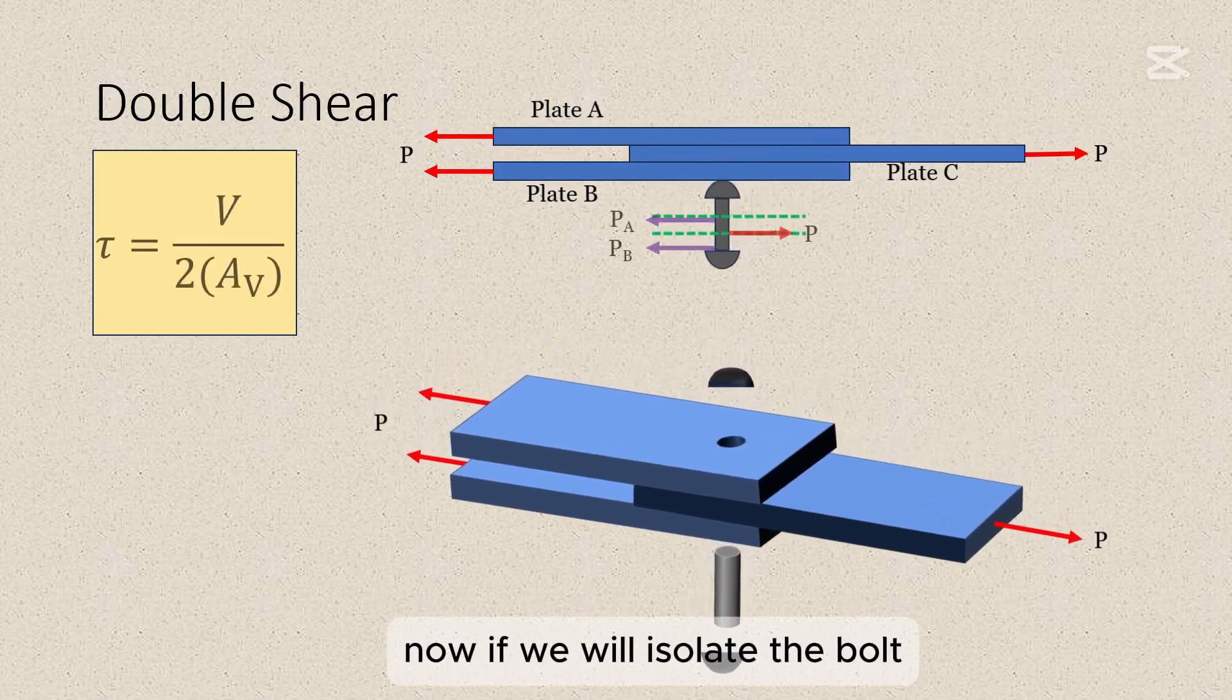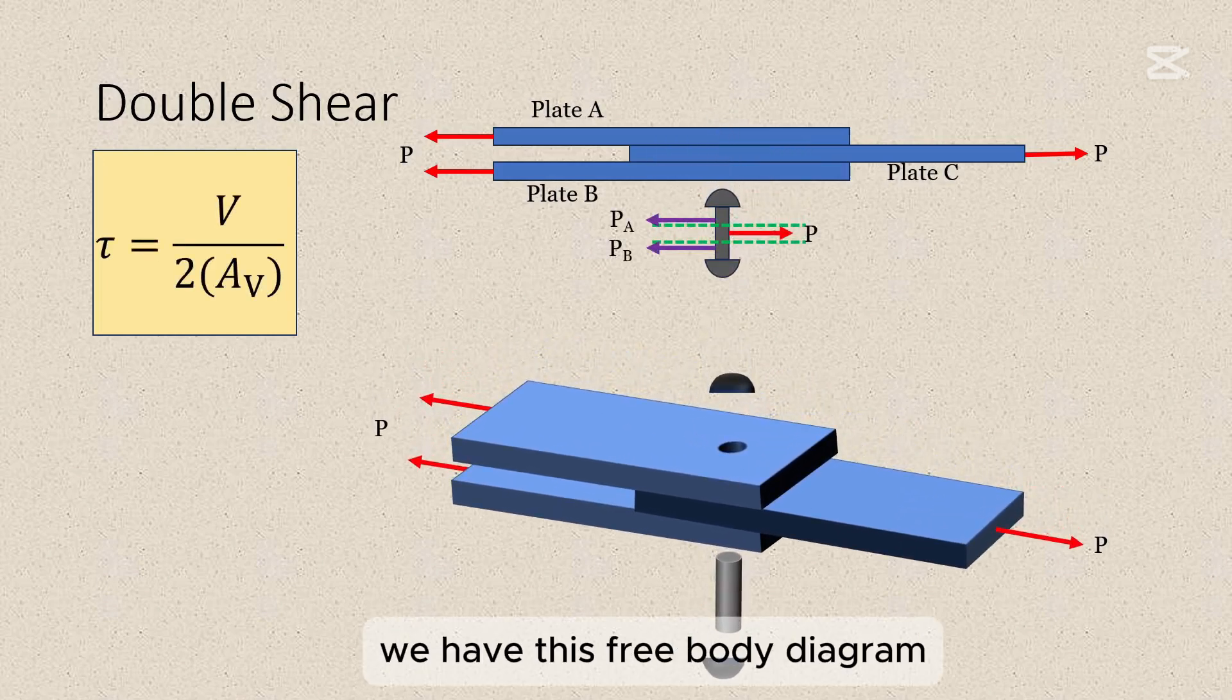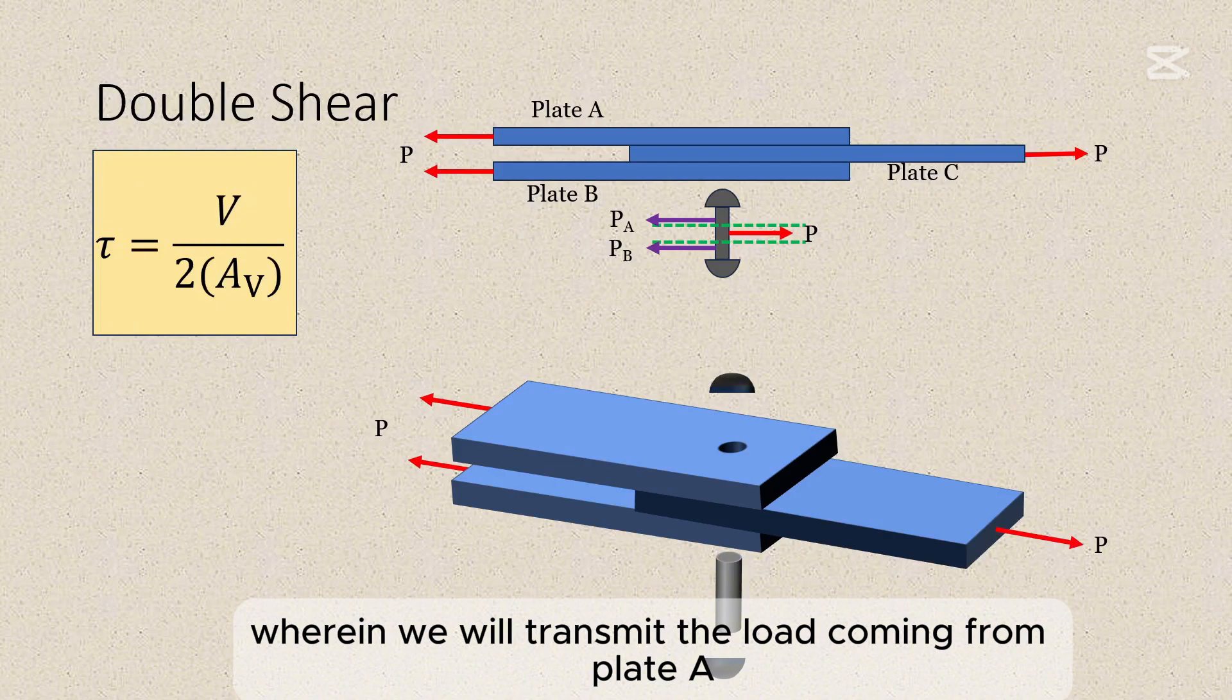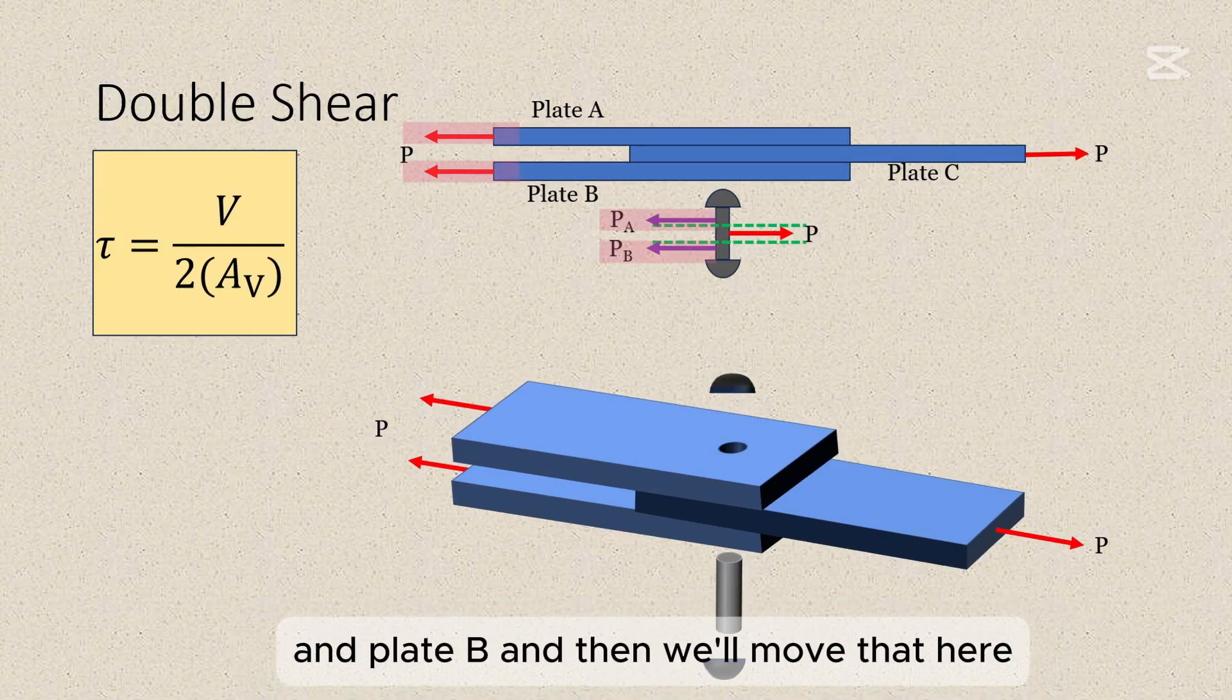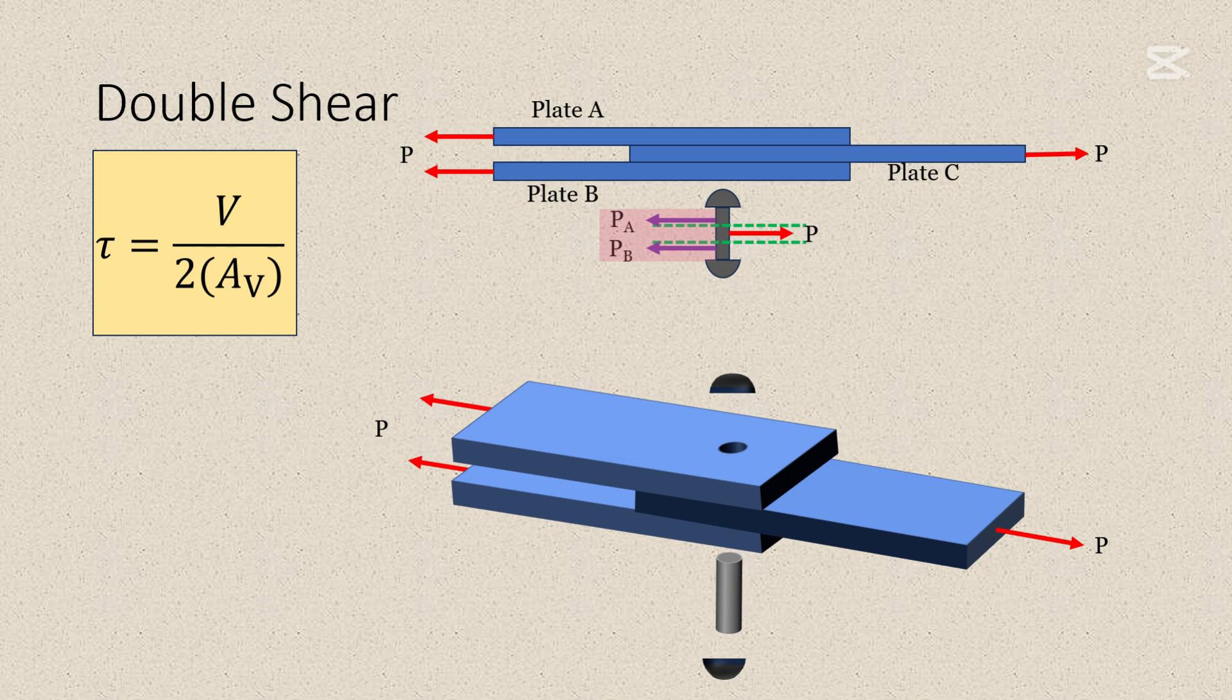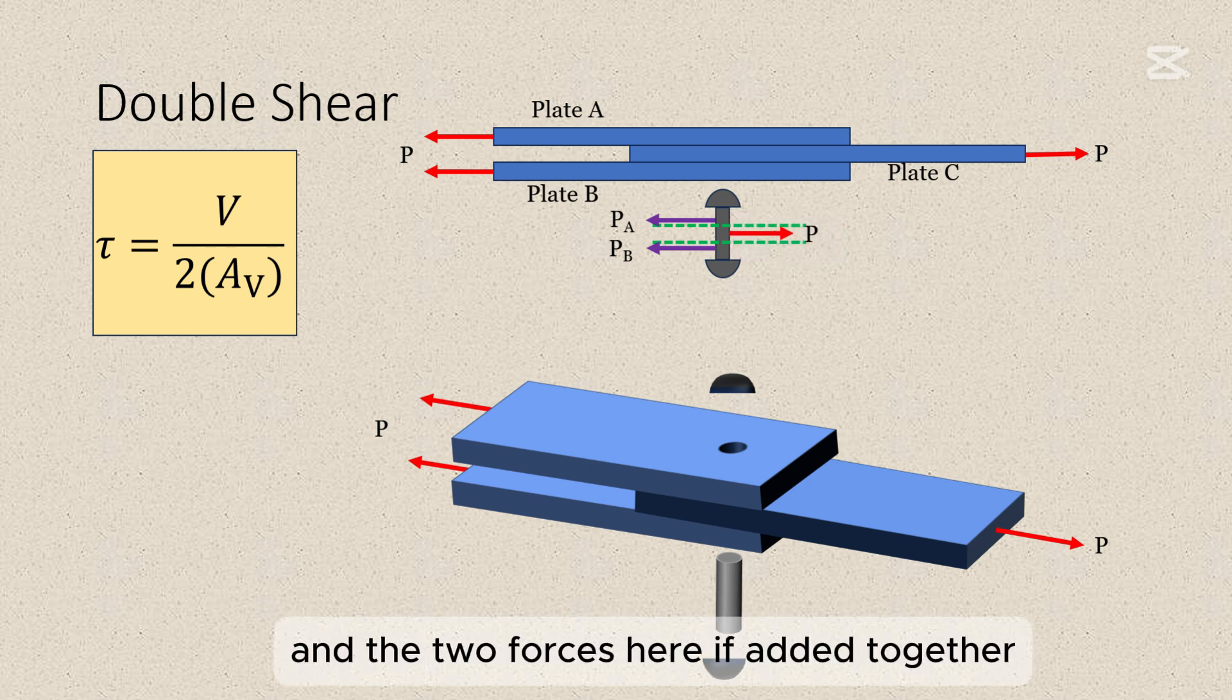Now if we'll isolate the bolt, we have this free body diagram, wherein we will transmit the load coming from plate A and plate B, and then we'll move that here. Now keep in mind that this body is in equilibrium, because we have P going to the right, and the two forces here, if added together, will just equal P.